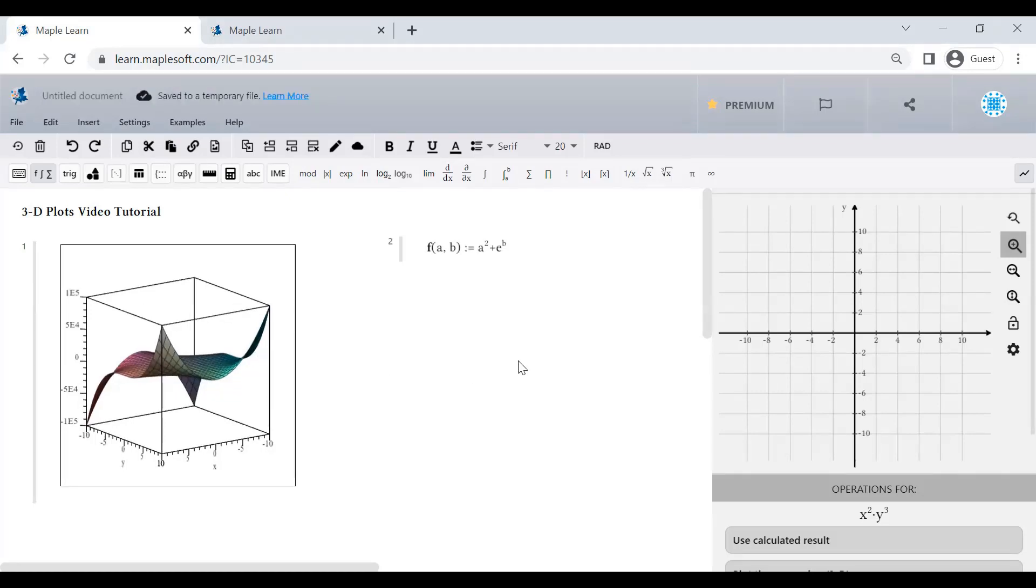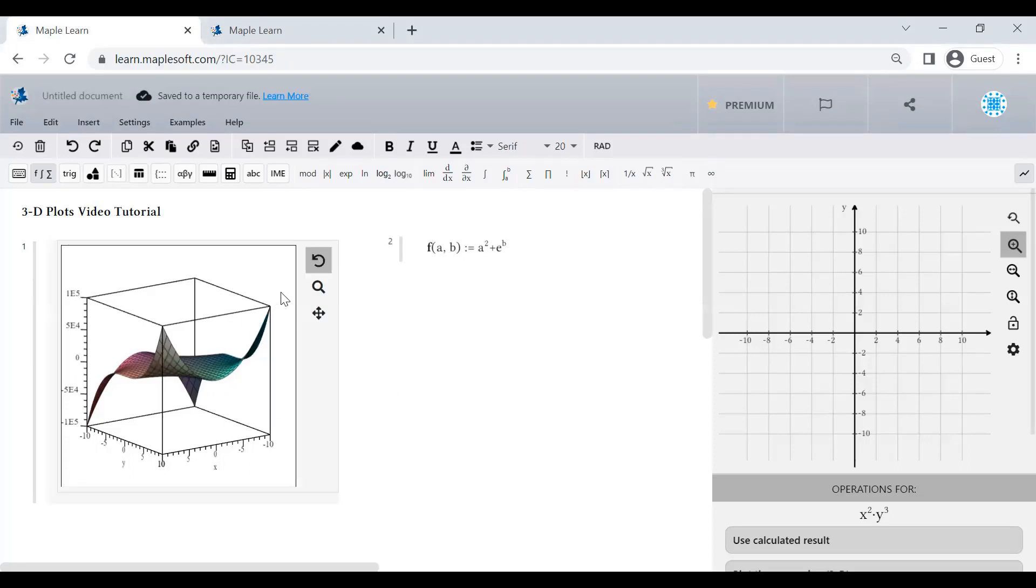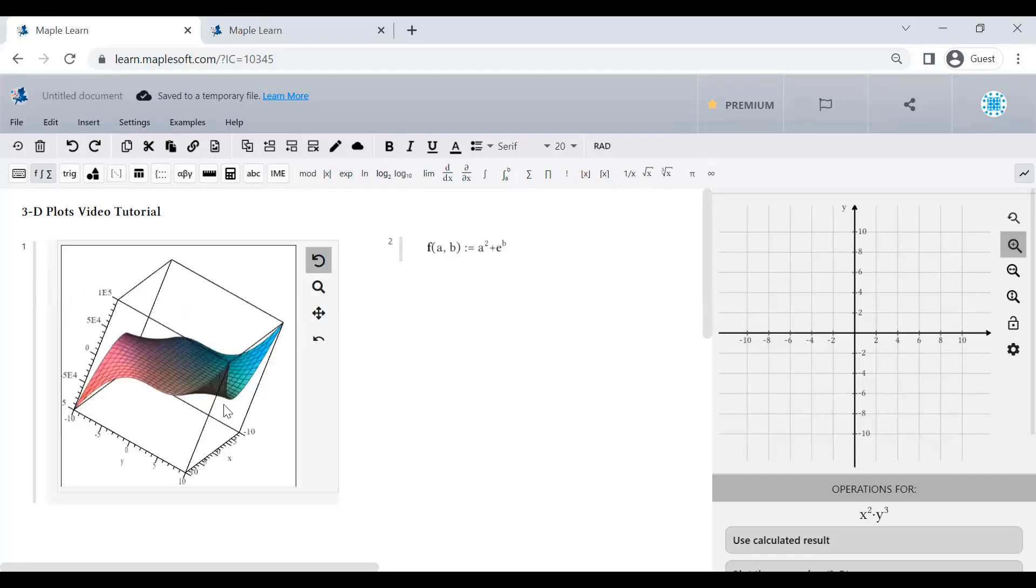Now let's see how we can view the plot. When you click a plot, you'll see some options off to the side. When the first icon is selected, click and drag the plot to rotate it.